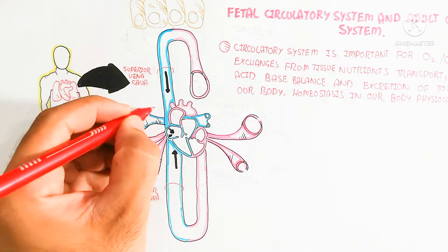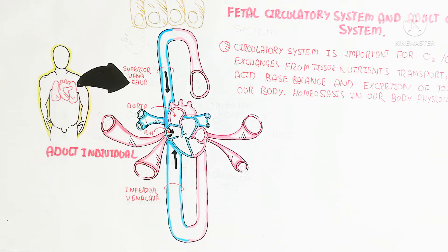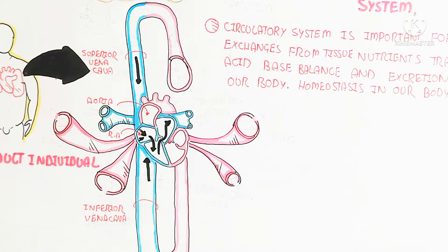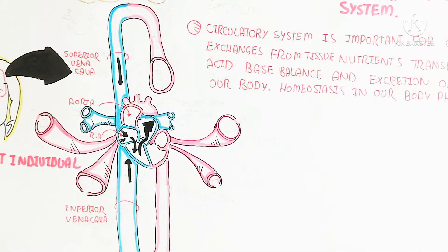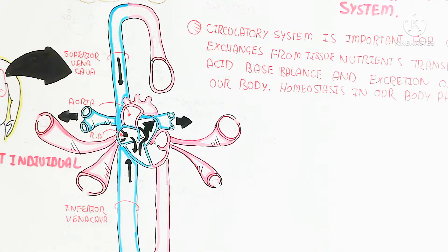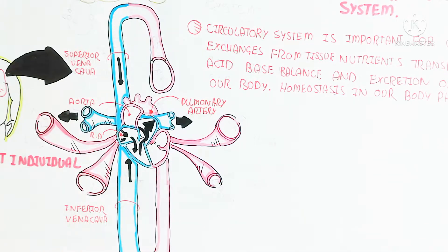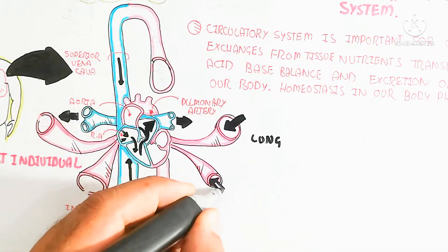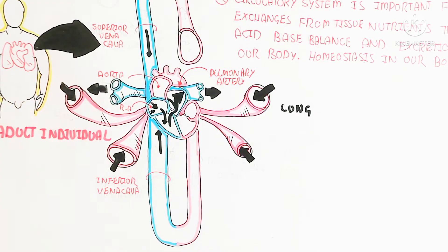The inferior and superior vena cava collect the deoxygenated blood after systemic circulation and go into the right atrium, then to the right ventricle, and ultimately through the pulmonary valve into the pulmonary artery — which contains deoxygenated blood — moving toward the lungs. After breathing, carbon dioxide is exhaled and oxygen is inhaled, moving back toward the heart via the pulmonary vein.